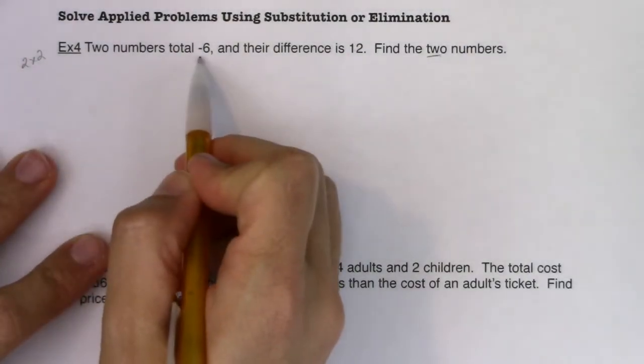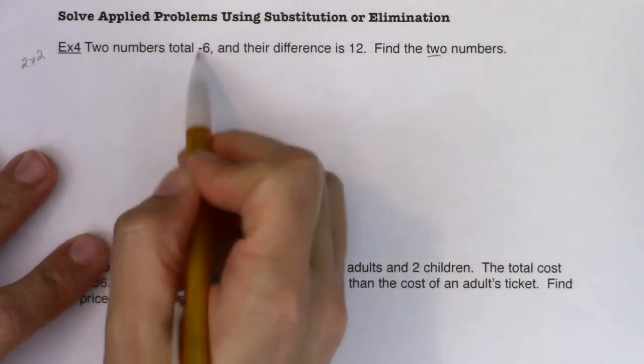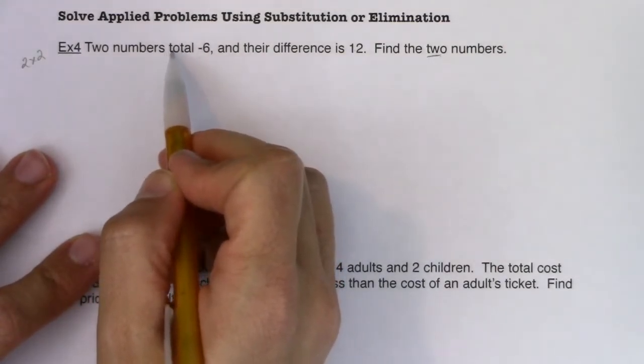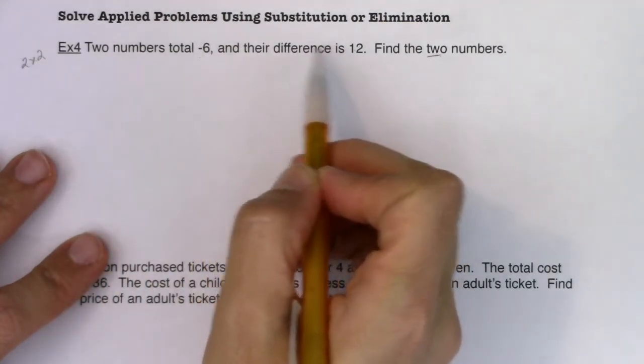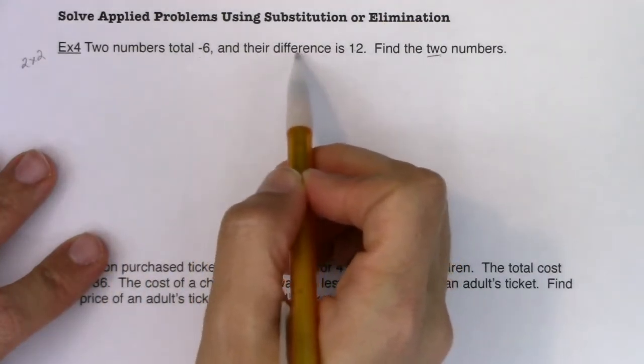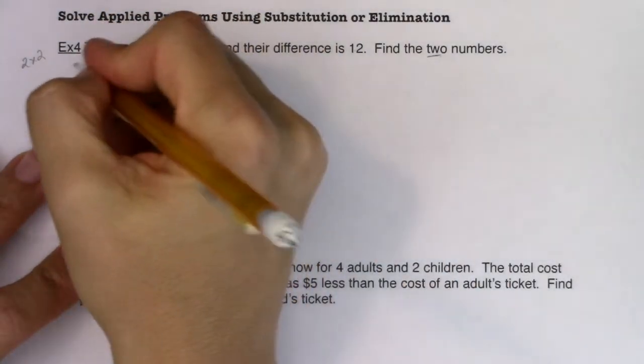It says two numbers total negative six. When you refer to totaling numbers, we're talking about adding numbers. Their difference is 12. When I hear difference of two numbers, I'm talking about subtraction.